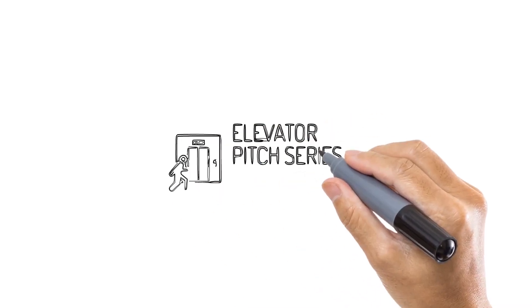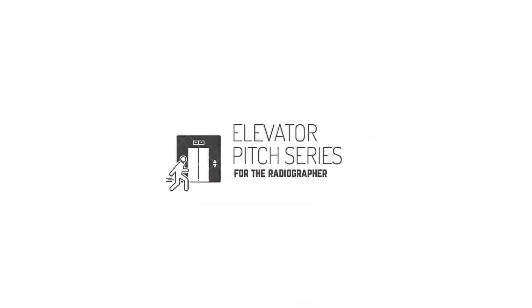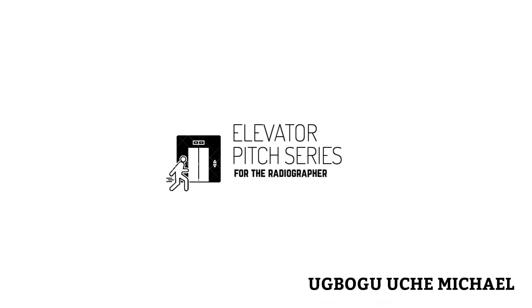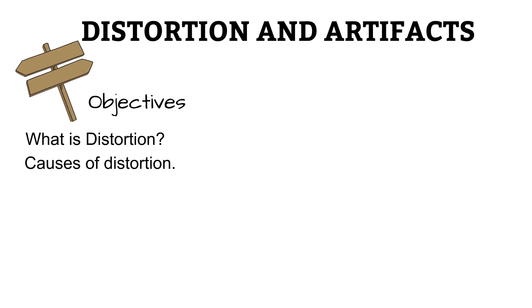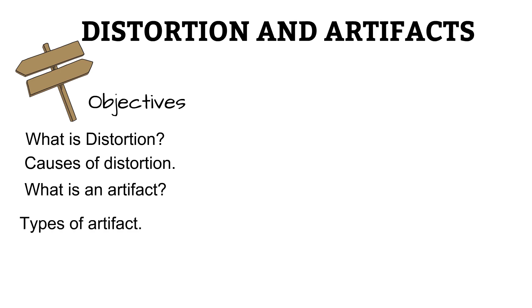Hello, and welcome to Elevator Pitch Series for the Radiographer. I am Michael, and this is the fifth video in the series on Radiographic Imaging. In this video, we'll be looking at some usually undesired properties a radiograph can have: distortion and artifacts. We'll be finding out what distortion is and some causes of distortion. We'll also be learning about artifacts and some types of artifacts.